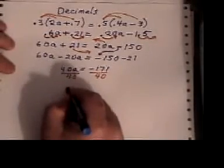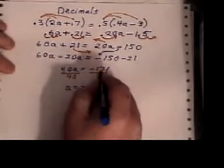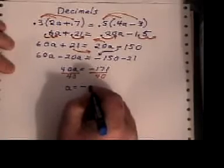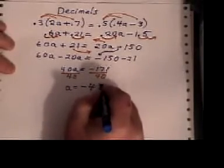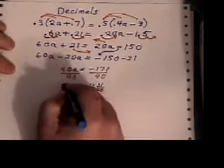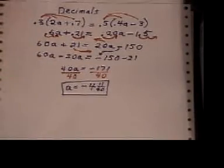And when you're through, you can do a negative divided by a positive is a negative. 171 divided by 40 is 4, and 11 fortieths left over. Or you could use it as a decimal and use your calculator to work that out.